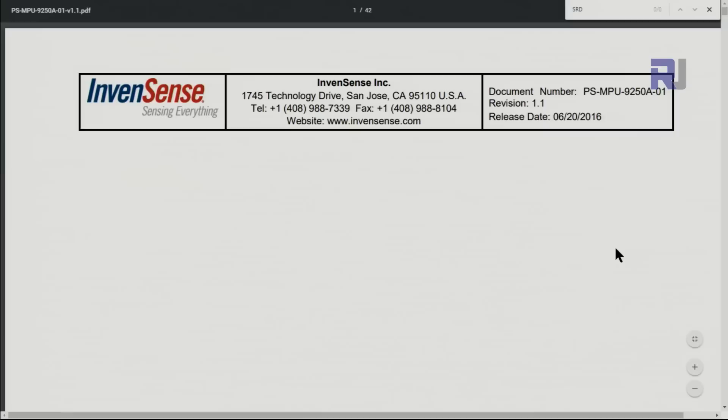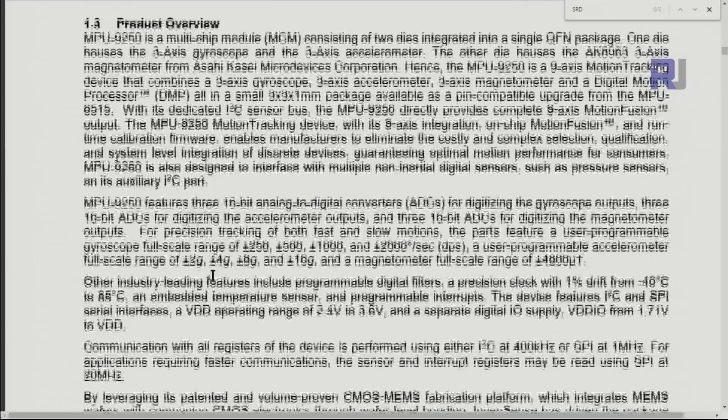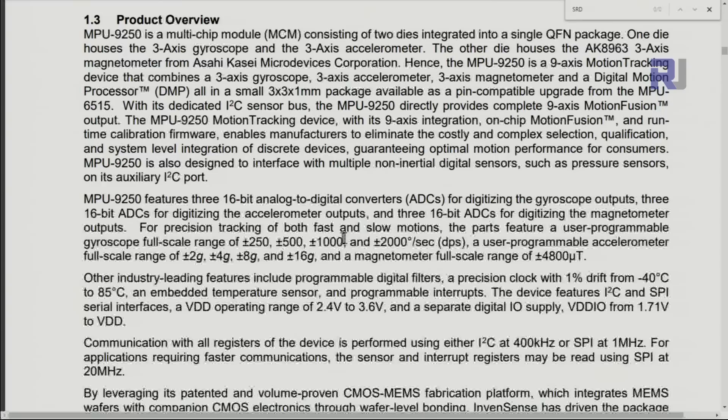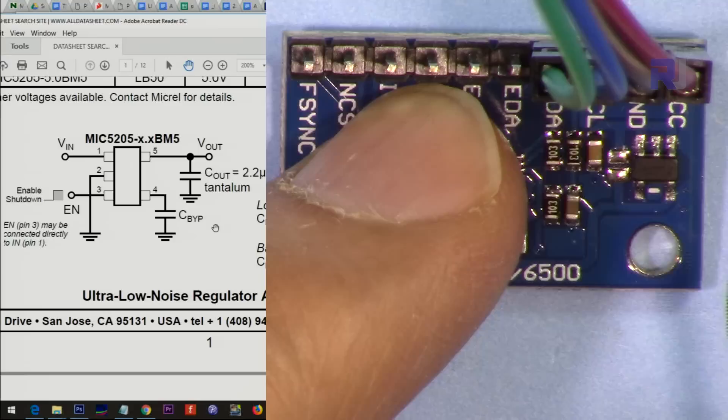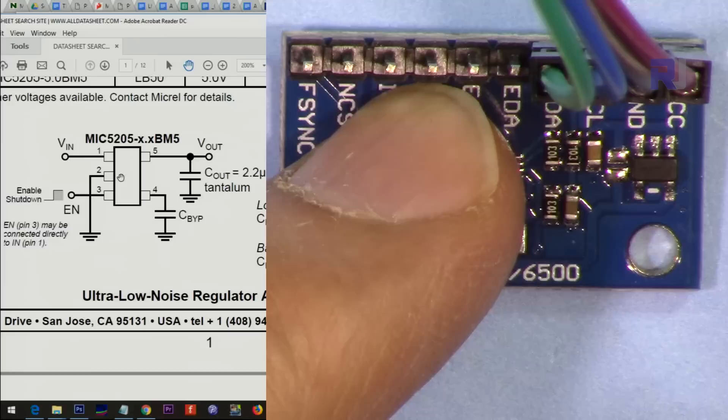Now let's have a look at the datasheet for this MPU9250. There are dimensions about the scale and range. For acceleration you can set plus minus 2, 4, 8, or even 16G. For gyroscope you can set different degrees per second. For the magnetometer you can go up to plus minus 4,800 micro Tesla. Operating temperature is from minus 40 to 80 degrees. Operating voltage is 2.4 to 3.6 volts, but because we are using this PCB module it has an internal 3.3V regulator.